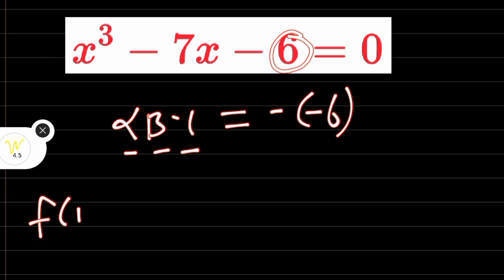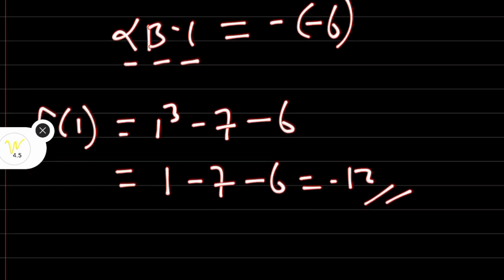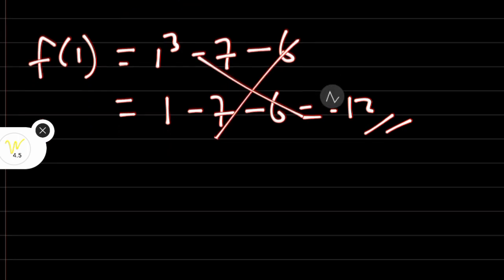We are going to try f of 1 equal to x cubed minus 7x minus 6. Then f of 1 is 1 cubed minus 7 times 1 minus 6, which is equal to 1 minus 7 minus 6. This is not going to give us 0. 1 minus 7 is minus 6, minus 6 more gives minus 12. Therefore, 1 is not a root.